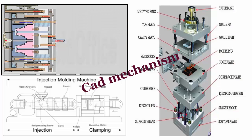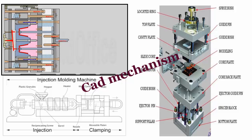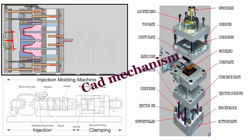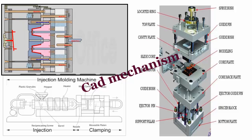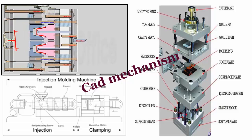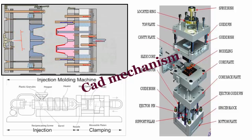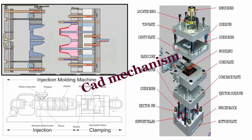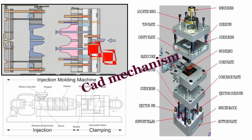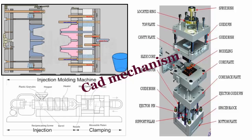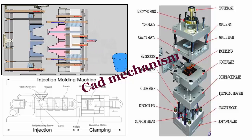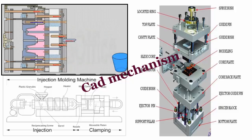Injection molding is a manufacturing process for producing parts by injecting material into a mold. Injection molding can be performed with a host of materials, mainly including metals — for which the process is called die casting — glasses, elastomers, confections, and most commonly thermoplastic and thermosetting polymers.